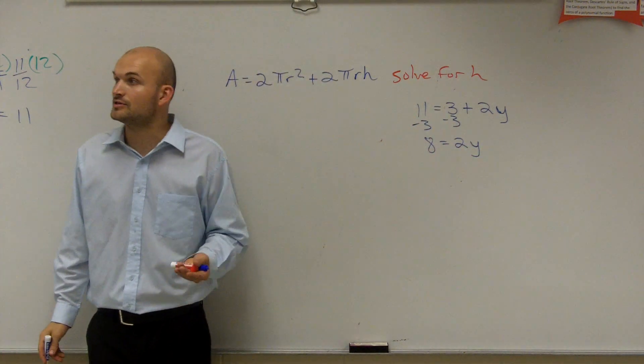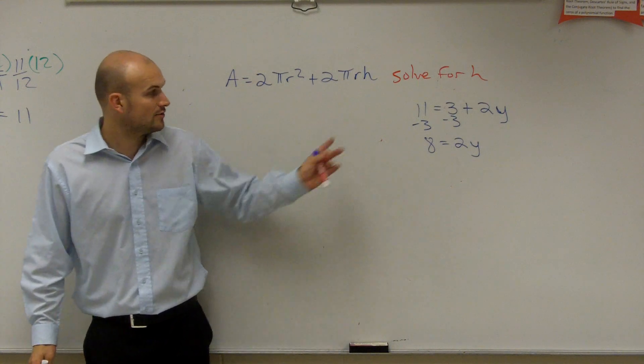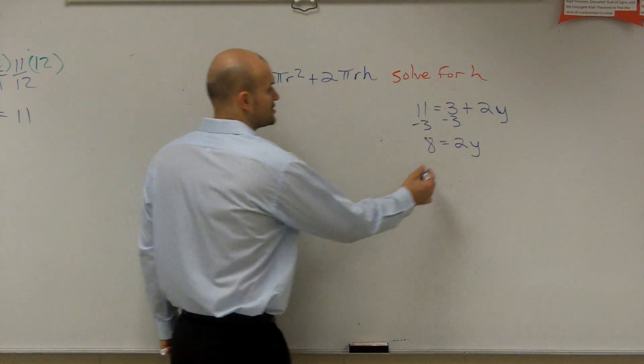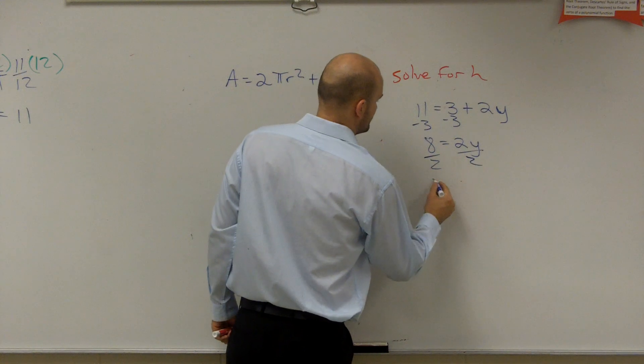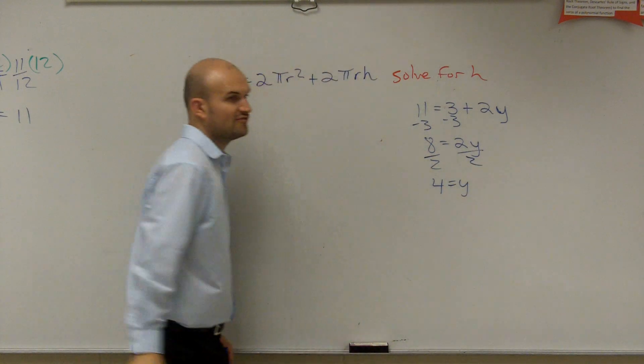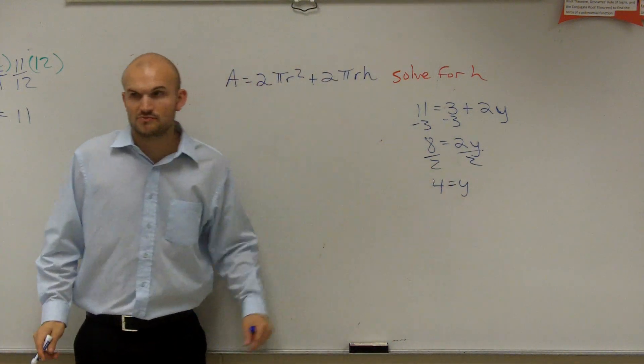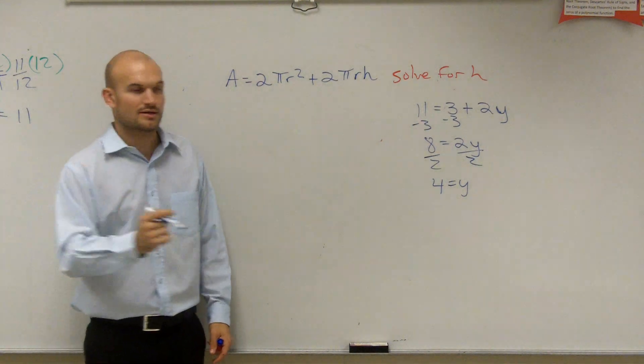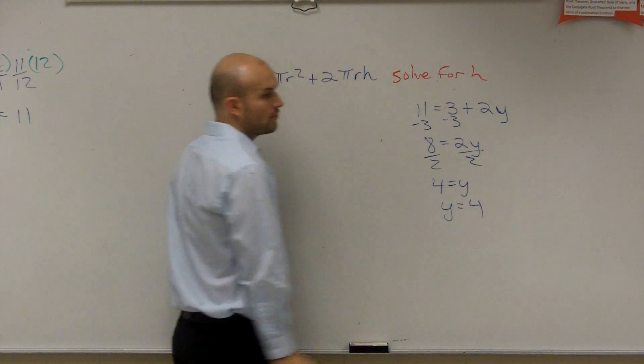Then what else is happening to the variable that's preventing it from being by itself is being multiplied by 2. So to undo multiplication, we divide by 2. So you get 4 equals y. Now my variable is by itself. I've solved for it, which we can just rewrite as y equals 4.